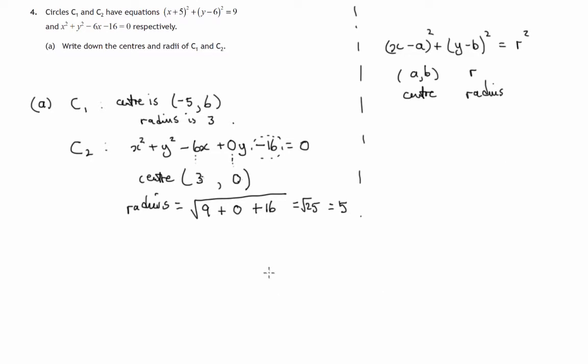So let's now see what part B is asking us to do. It's saying show that C₁ and C₂, that's these two circles, do not intersect. Well, I think we should maybe have a look at a diagram just to see roughly what's going on.